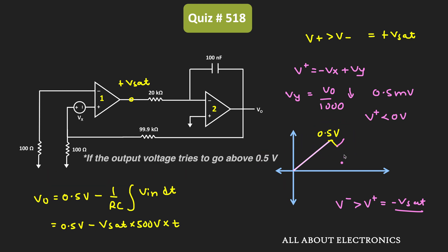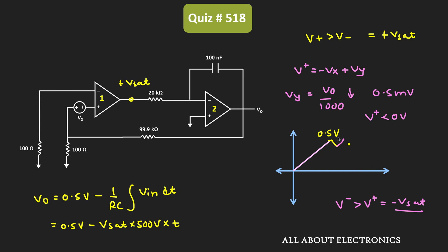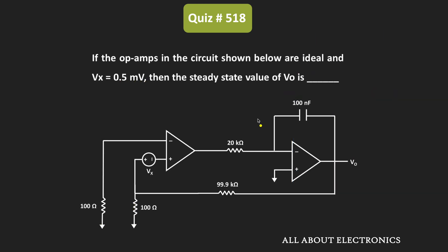In the actual circuit, this voltage swing will be very small. If the output voltage tries to go below 0.5 volt, the output of the first comparator will become plus Vsat. In this way, this circuit forces the output voltage to remain at 0.5 volt. That means in the steady state condition, the output of this circuit is equal to 0.5 volt — so for the given circuit, the output voltage is equal to 0.5 volt.